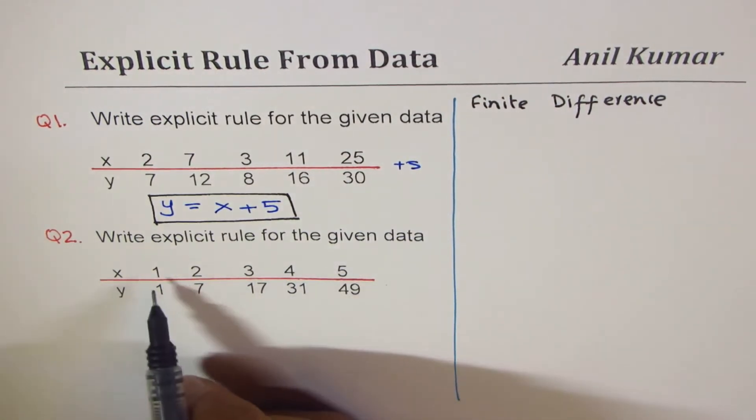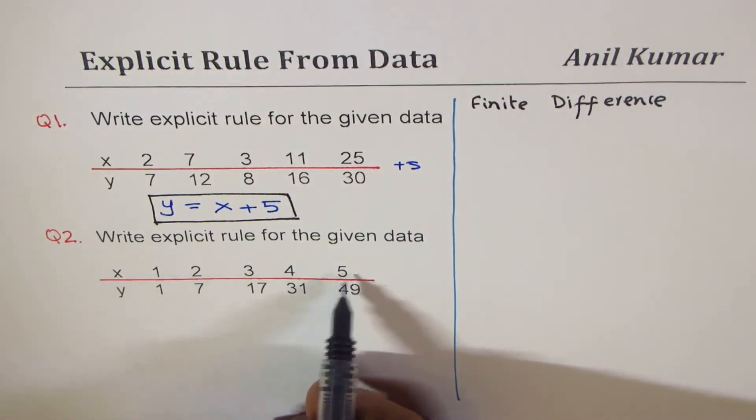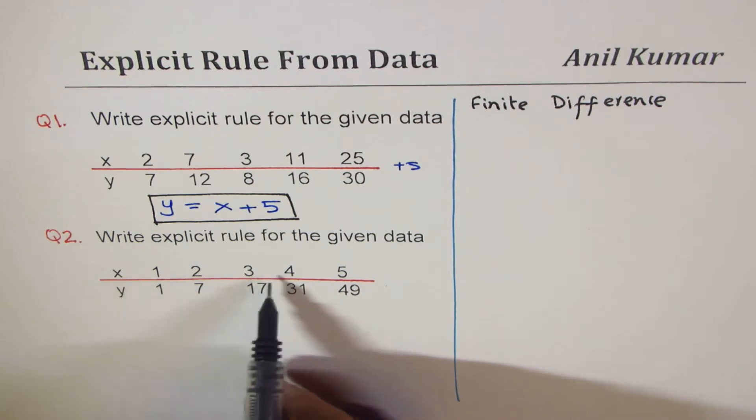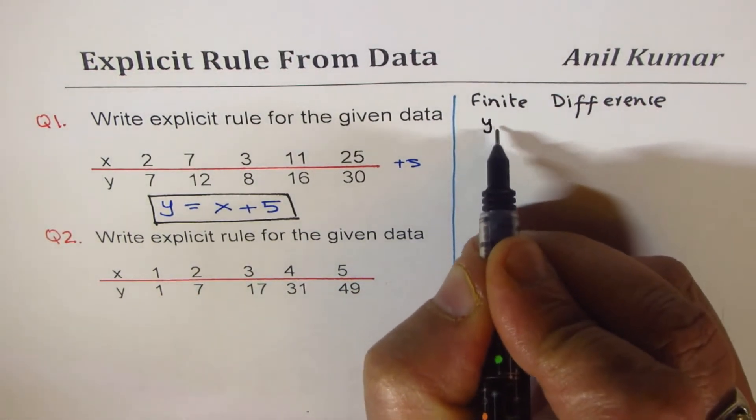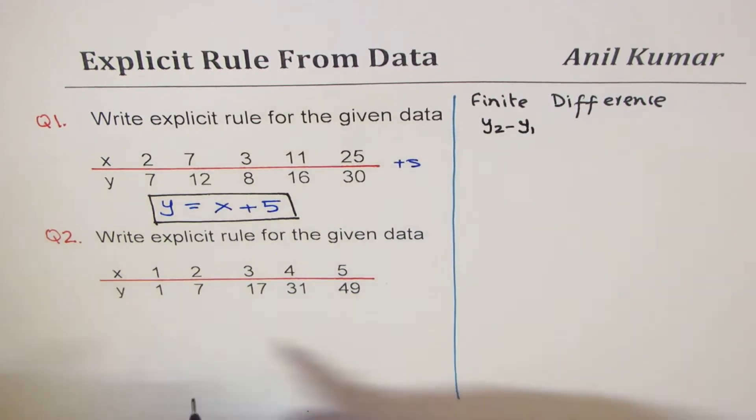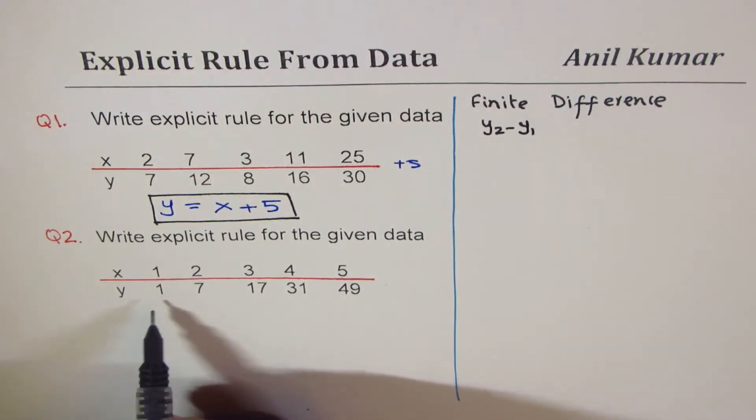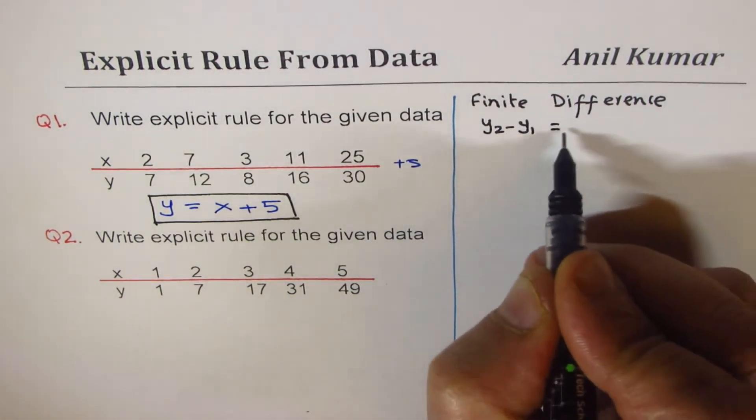So in finite difference, we have to arrange x values in a particular order—increasing by one is the best way—and then we find y2 minus y1. First time when we do it, we'll call it first finite difference, which I'm writing as delta 1.